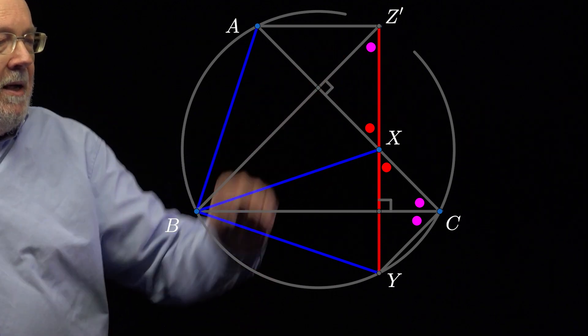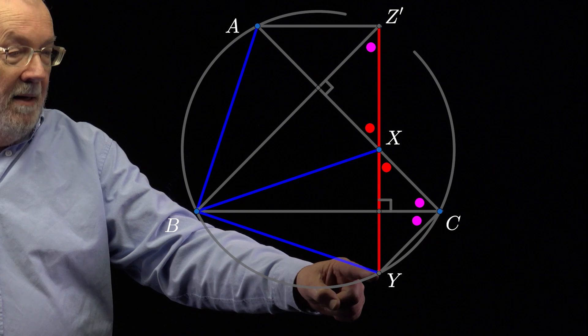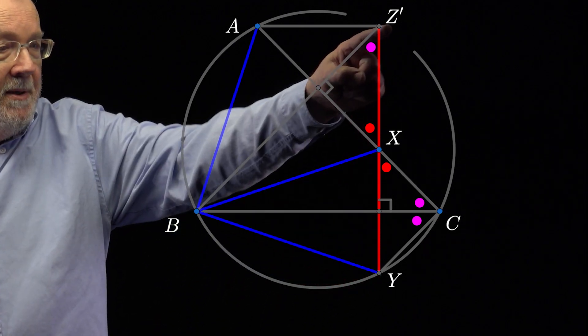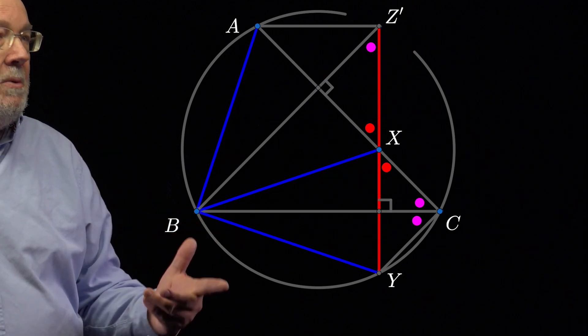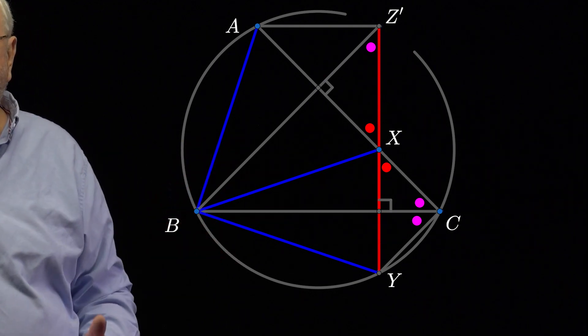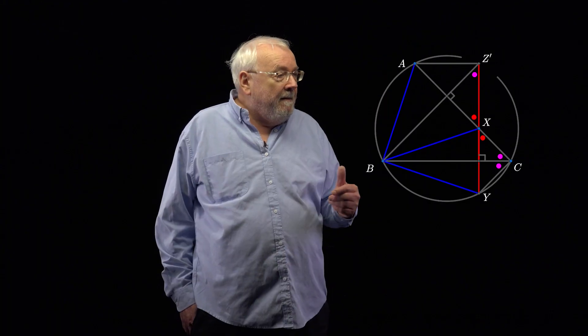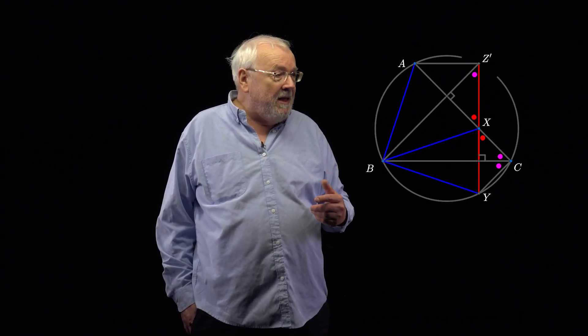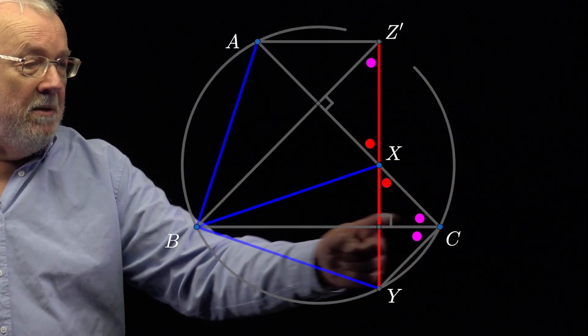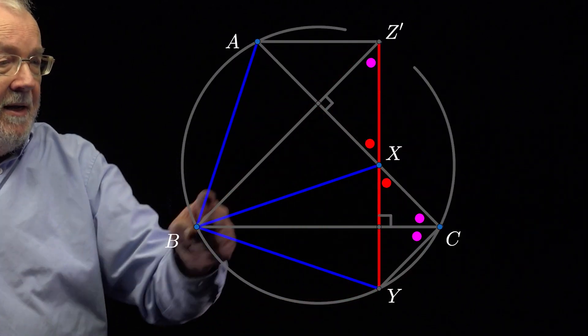And then, in this other right angle triangle up here, you have the same argument. And so, the angle up here, which is YZ'B, must be equal to angle C. They're the same colour as marked.